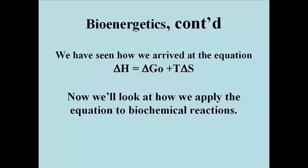We've considered the bioenergetics of closed systems and arrived at the equation delta H equals delta G0 plus T delta S. We'll apply this equation to see how delta H, or enthalpy change, and delta G0, the standard free energy change, can be determined for chemical reactions.